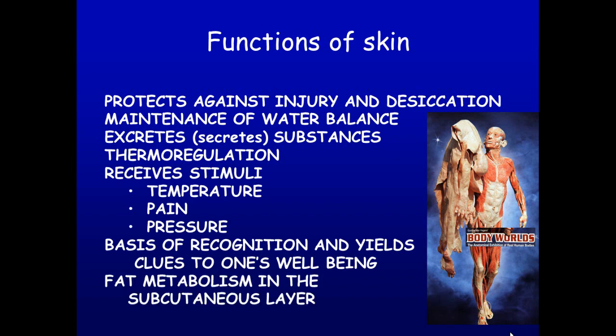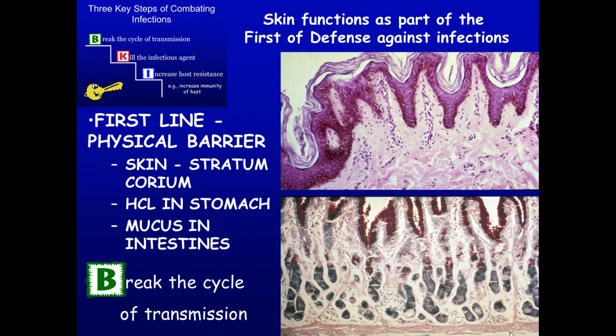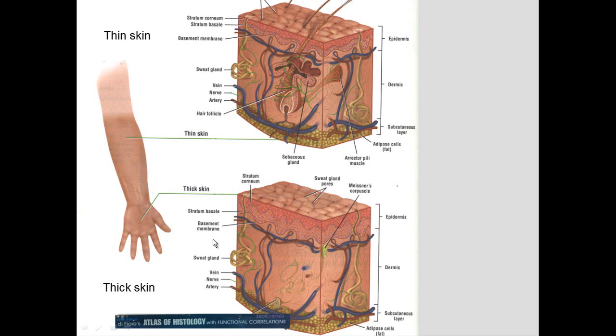Skin also provides fat metabolism in its subcutaneous layer, the lower layers of the skin. As a basis of recognition, it yields clues about one's health and age. Remember the three key steps in combating infection — one of the main ones is breaking the cycle of transmission, and that's done by a physical barrier. In one case it's the skin; it can also be part of the digestive tract as well.